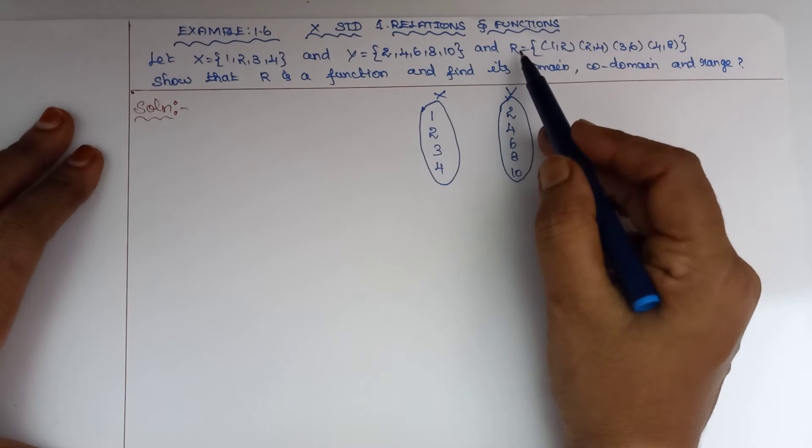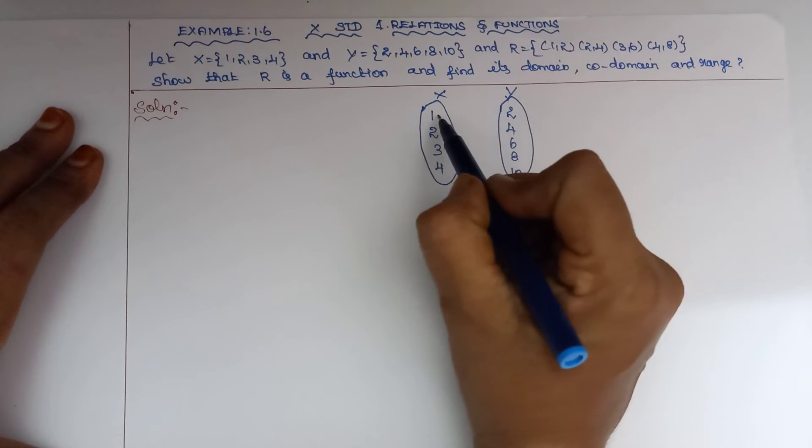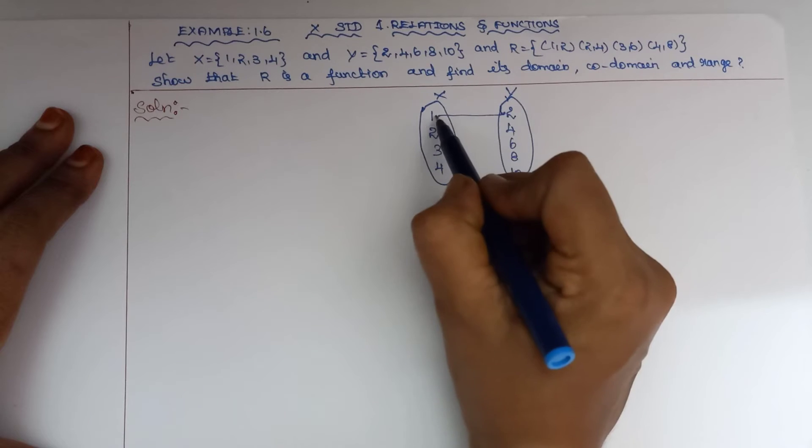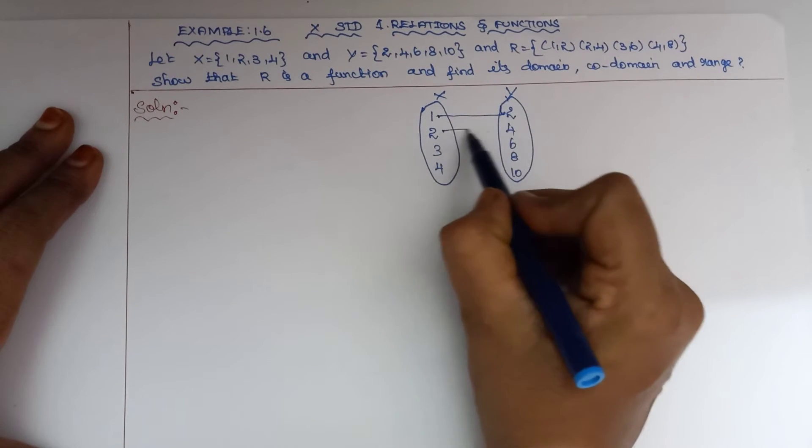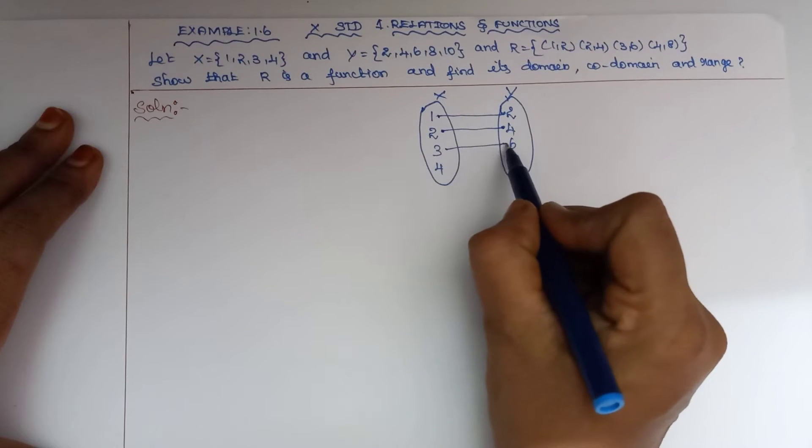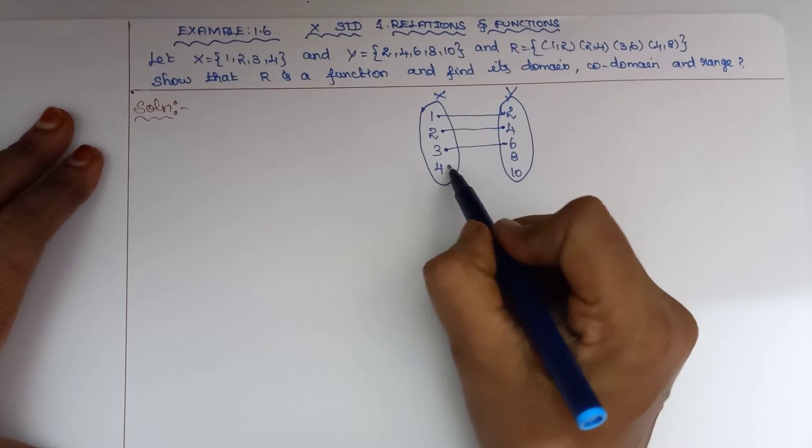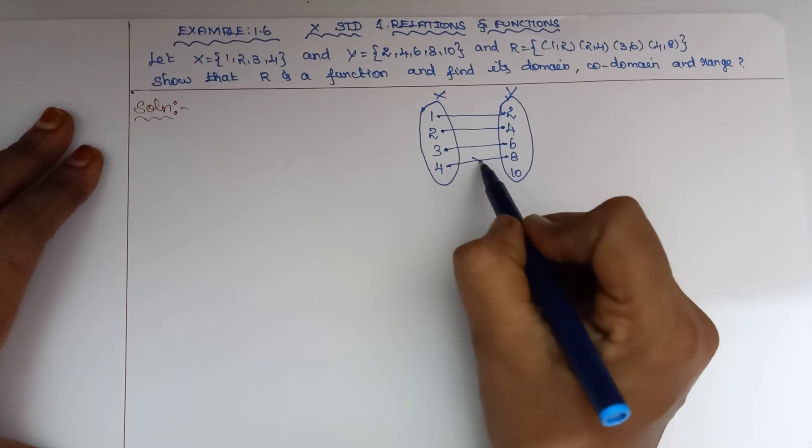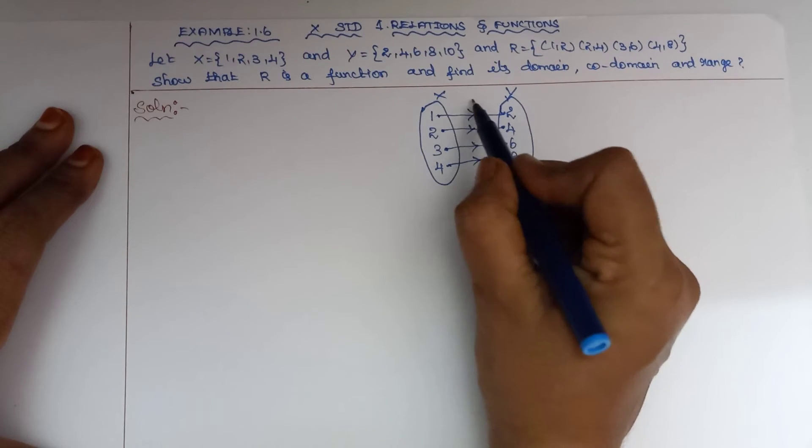Now I'll show the relation. 1 is related to 2, so I'll connect 1 and 2. Then 2 is related to 4, 3 is related to 6, and 4 is related to 8.